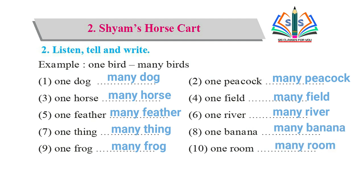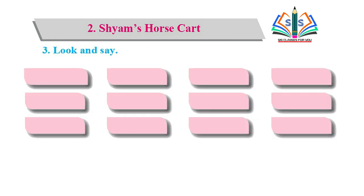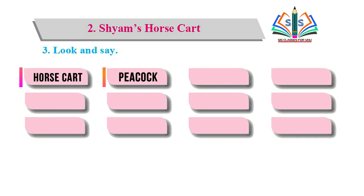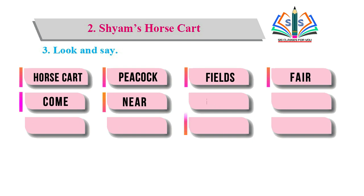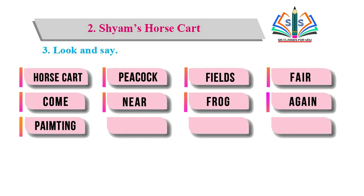One room, many rooms. Third question is 'look and say'. یہاں پر what's the way - اس کو ہم لوگوں کو دیکھنا ہے اور pronounce کرنا ہے: horse, cart, peacock, fields, fair, come, near, frog, again, panting, quite, happily.